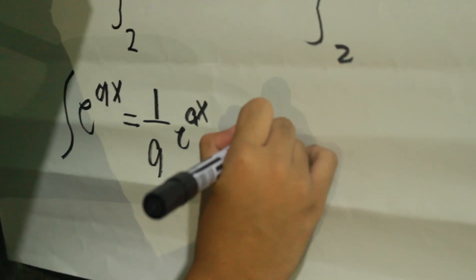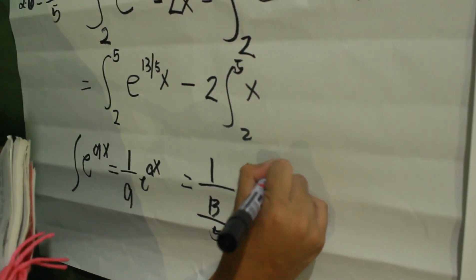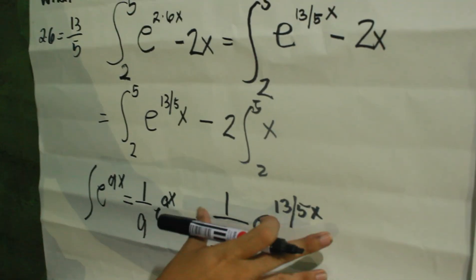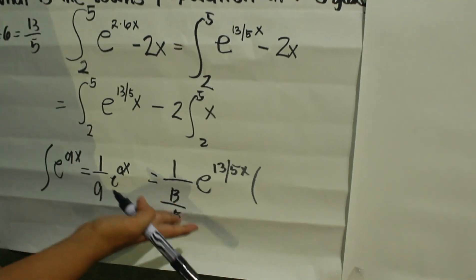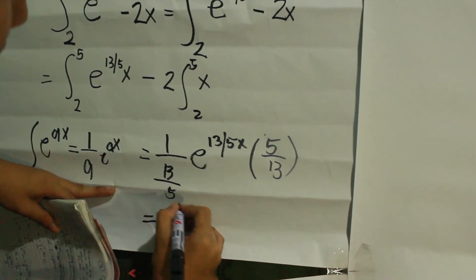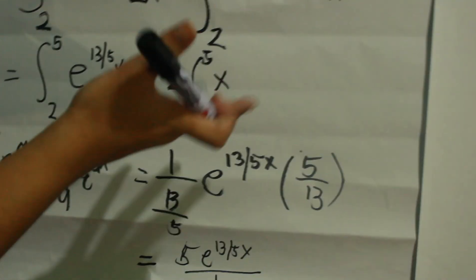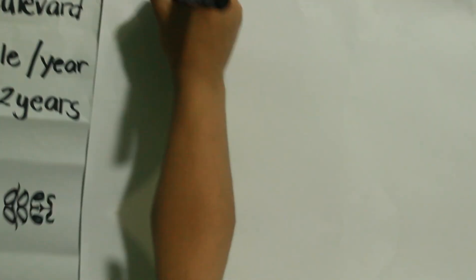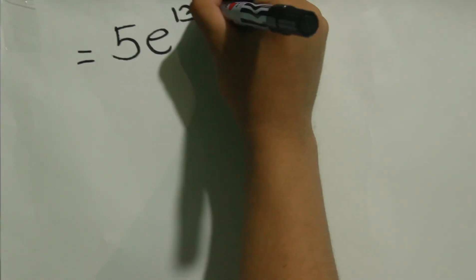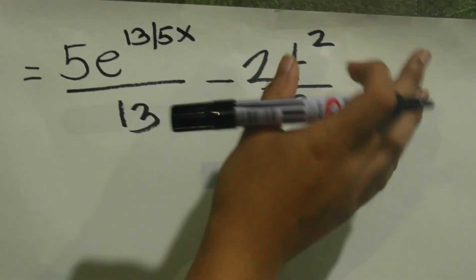Since our a is 13 over 5, the integration gives us 1 over (13 over 5) times e raised to 13 over 5 x. To simplify, we multiply by the reciprocal of 13 over 5, which is 5 over 13, giving us 5e raised to 13 over 5 x over 13. Then we get the integration of the next term, which gives us minus 2 times x squared over 2.